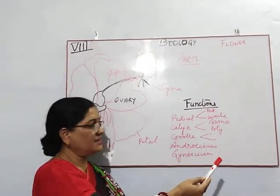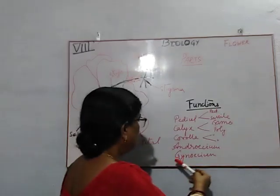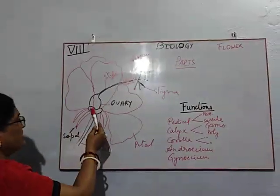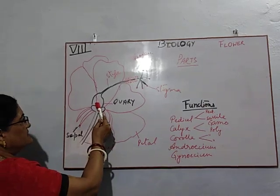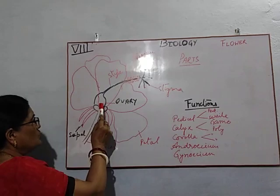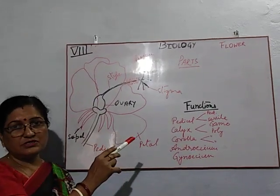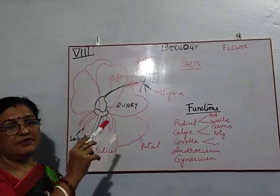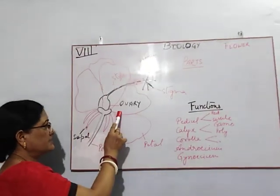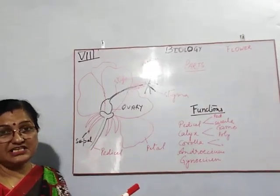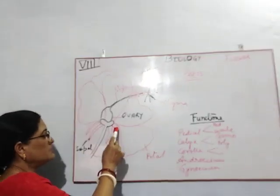Pollination can give us fruit. Now next is gynoecium. You can see here that there are three parts: ovary, style, and stigma. Ovary contains ovules. The ovule is the female gamete of the flower, which when it ripens, forms the seed of the fruit.